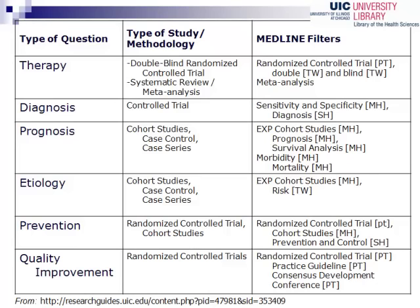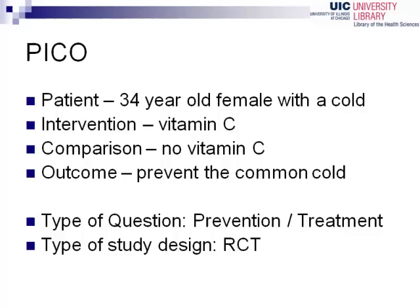Now let's take a look at an example. We have a patient with a cold who wants to know if taking vitamin C helps prevent colds. This is a question about prevention or treatment, so we might expect to find at least one good randomized controlled trial, or even better, a systematic review or meta-analysis.